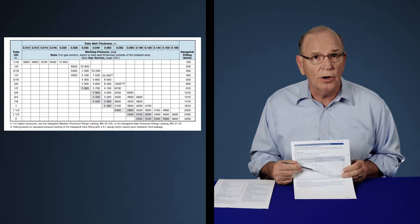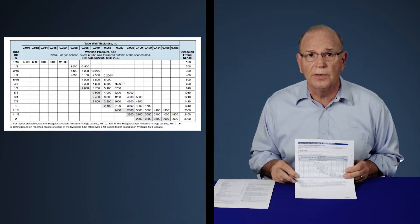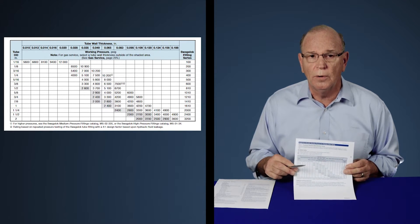If you're working at a higher pressure, say 4,000 PSI, you'll need to move over to the next highest wall thickness, 065 wall.